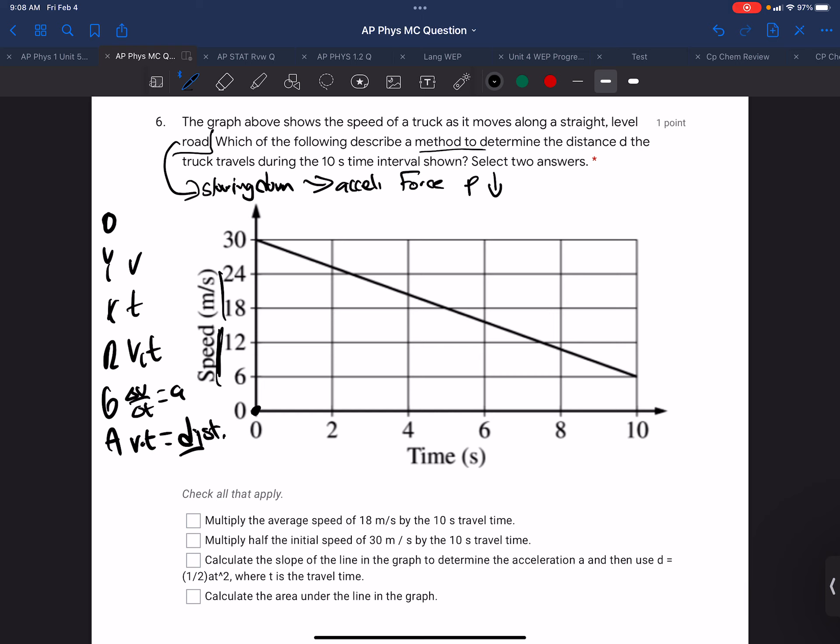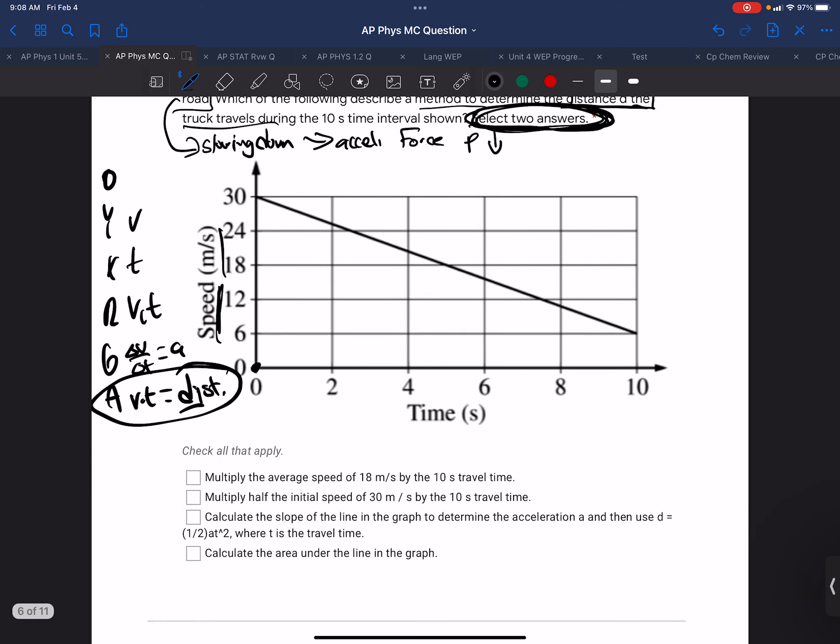What describes a method to determine the distance the truck travels? Select two answers. So the distance is the area. We might be looking for multiply, calculate the area. So choice D, we know, is one of the two choices.